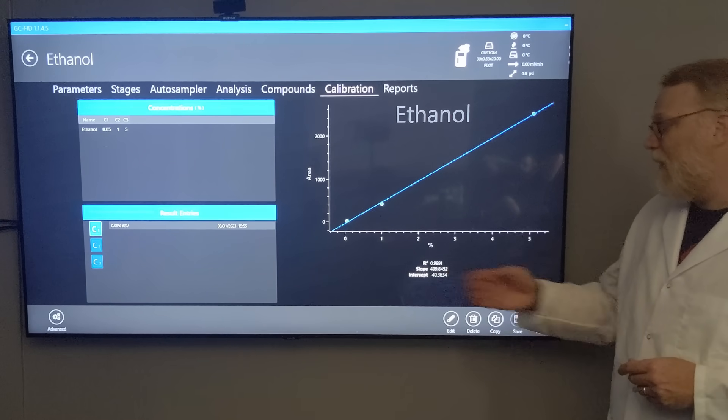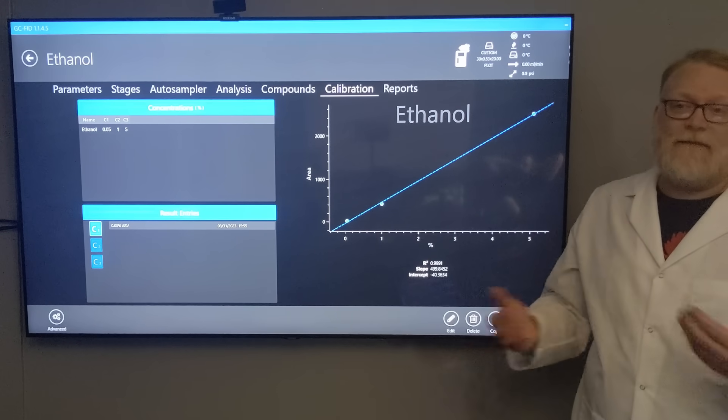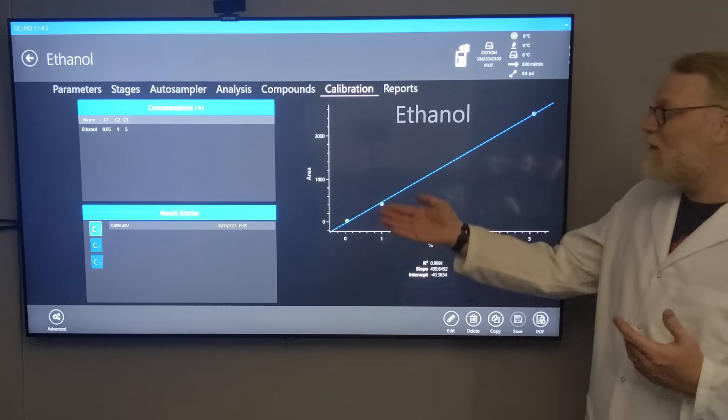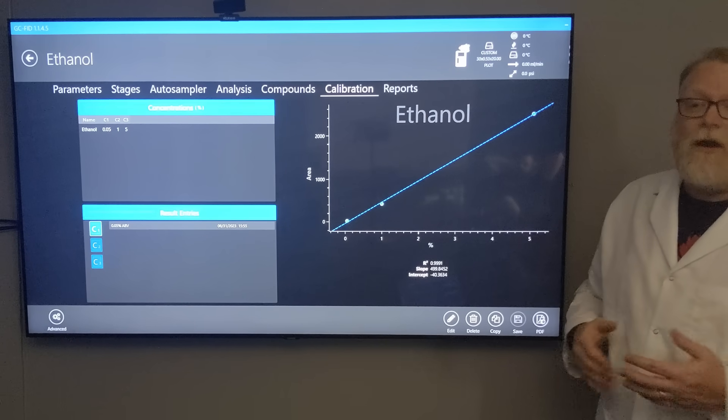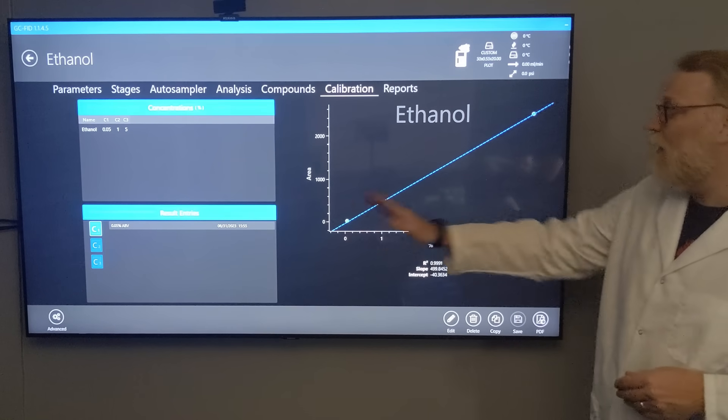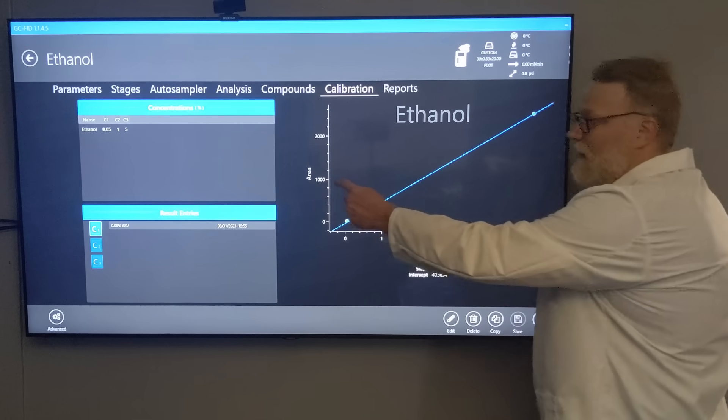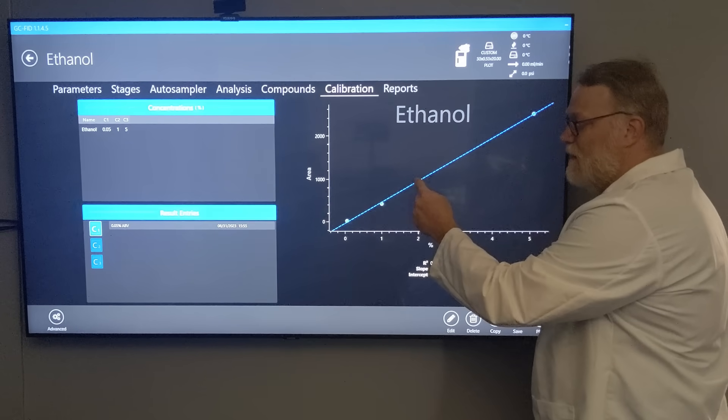What does that tell us? It tells us if we do an unknown, we want to keep it bracketed between our points - our lower point and upper point. Say we got an area of 1000; we would draw a line across and then drop it down, and it would give us some value.